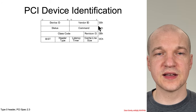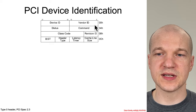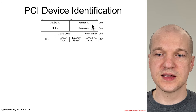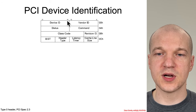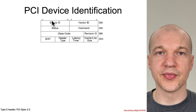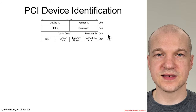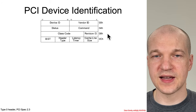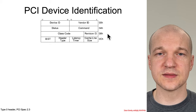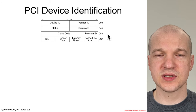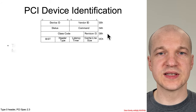The least significant bits are to the right as you would expect. So byte zero is here, byte one, two, and three follow. Just keep in mind that this layout is perhaps upside down from what you might expect if this were an Intel document.